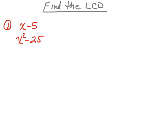The first thing we're going to need to do is factor each. Now x minus 5 can't be factored, so I'll leave it as x minus 5. x squared minus 25 can be factored using the difference of squares, so that gives us x minus 5 and x plus 5.